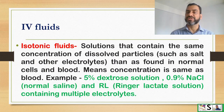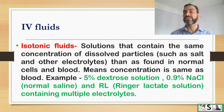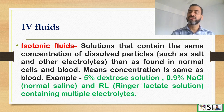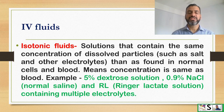Isotonic solution: solutions that contain the same concentration of dissolved material such as salt and electrolytes as found in the normal cell or blood — meaning the concentration is equal. Examples are 5% dextrose solution or D5, 0.9% sodium chloride or normal saline, or Ringer's Lactate solution that contains multiple electrolytes.